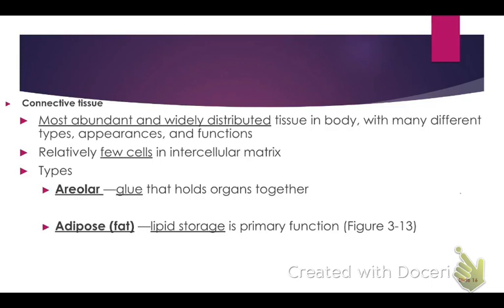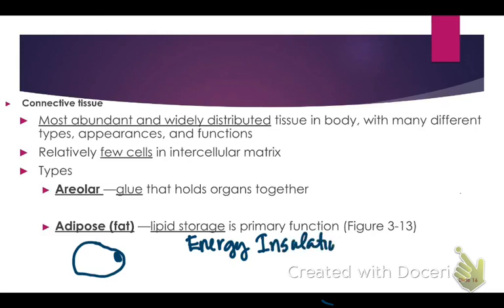Adipose tissue — fat tissue — is going to appear as really large cells with a tiny little nucleus in the corner, and the majority of the cell is going to be lipid storage for energy and insulation. We also have fat storage for protection. This is a problem with anorexia or bulimia — your kidneys are held in place and protected by fat, and if you lose all the fat on your body, your kidneys can actually sag and you can go into kidney failure.